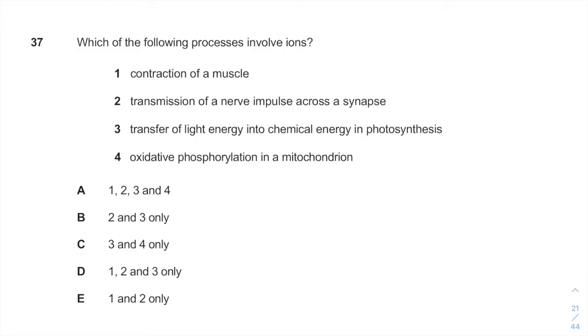So which of the following process involves ions? So first of all, let's define ion. Ion is an atom or a molecule that has a net electric charge. Calcium, potassium, sodium are all ions.